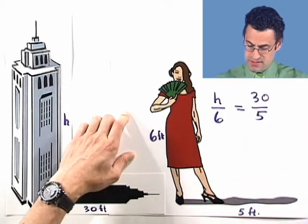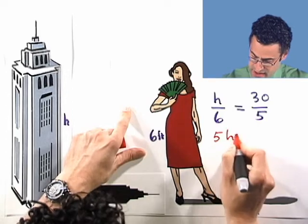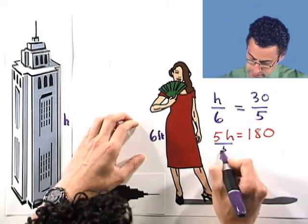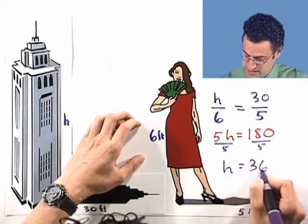And so now I can solve this. So let's solve it. I use the cross product and I see 5H equals 180. And I divide both sides by 5. And I see that H equals 36 feet.